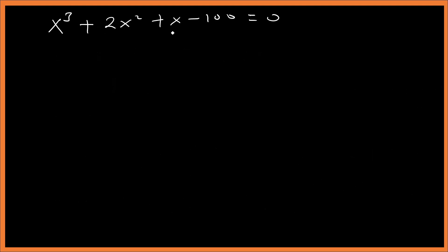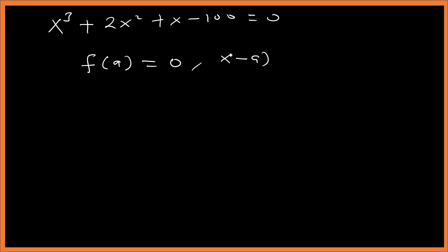Now let's recall: if f(a) equals zero, then x minus a is a factor of the polynomial. We'll use this to find a rational root.